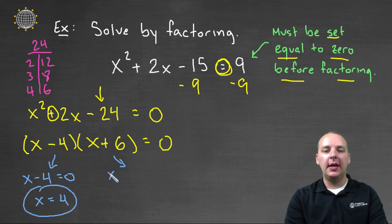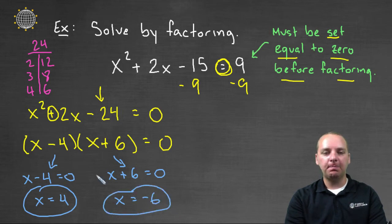And we'll take x plus 6 equal to zero, that factor equal to zero. And solve for x, and x would be negative 6. Okay so there are my two solutions.